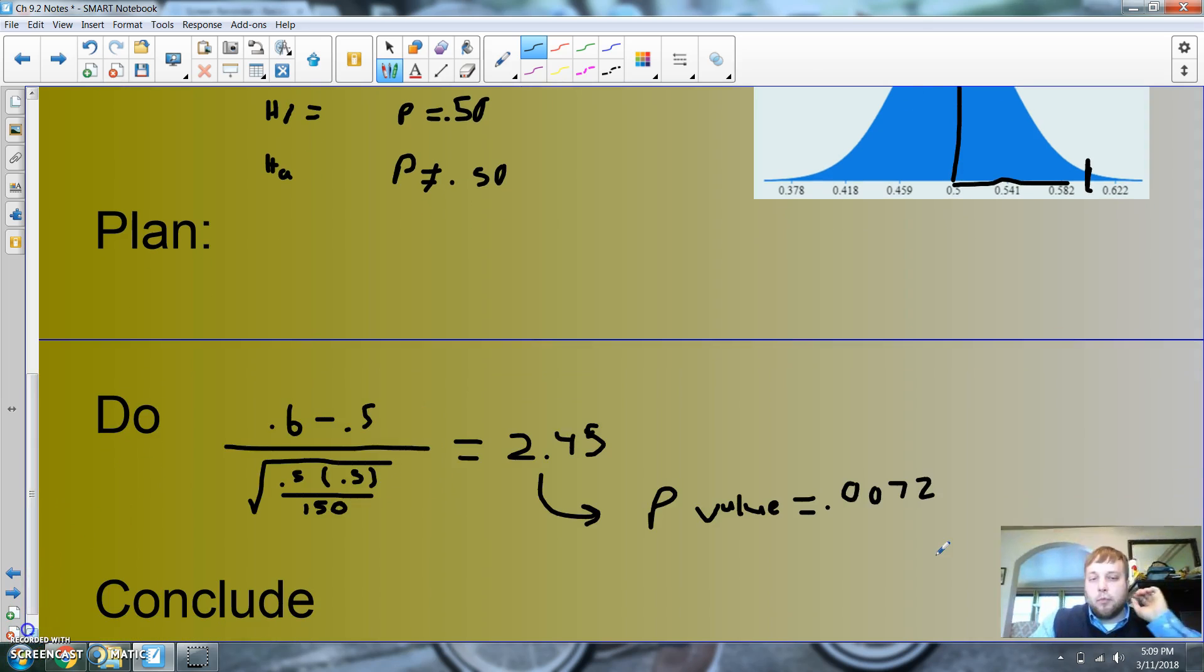Let me set up the do process. So I calculate this all out: what I got, 60%, minus what I should have got, divided by the standard deviation. Remember, it's 0.5 in the standard deviation. I get a z-score of 2.45. So that means I'm two and almost a half up here. This gives me probability below the line is 0.0072 if I look in my chart.